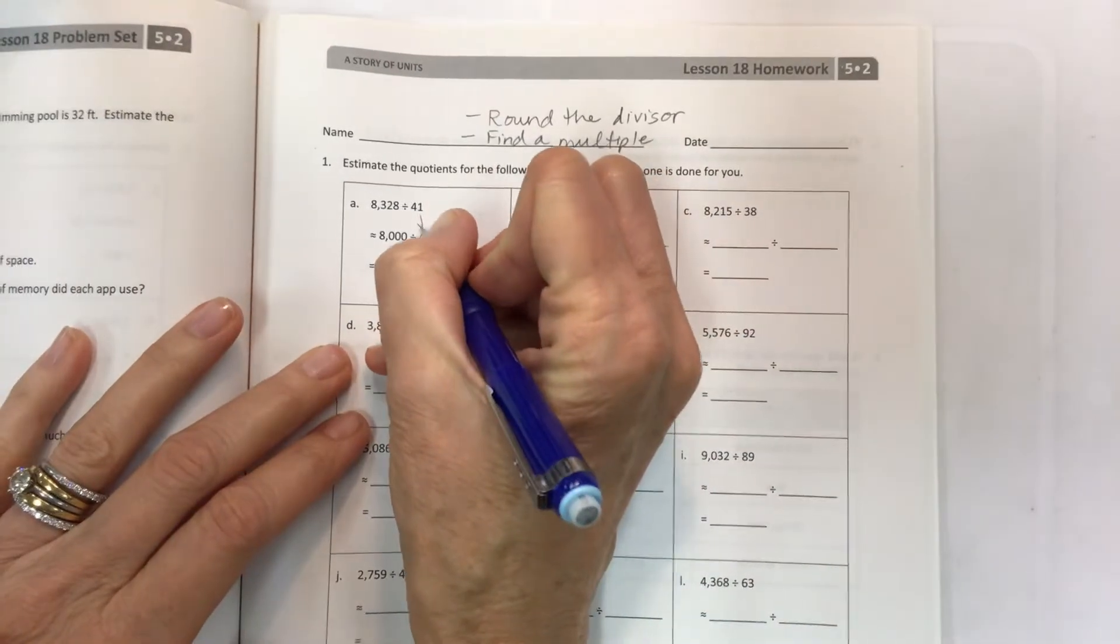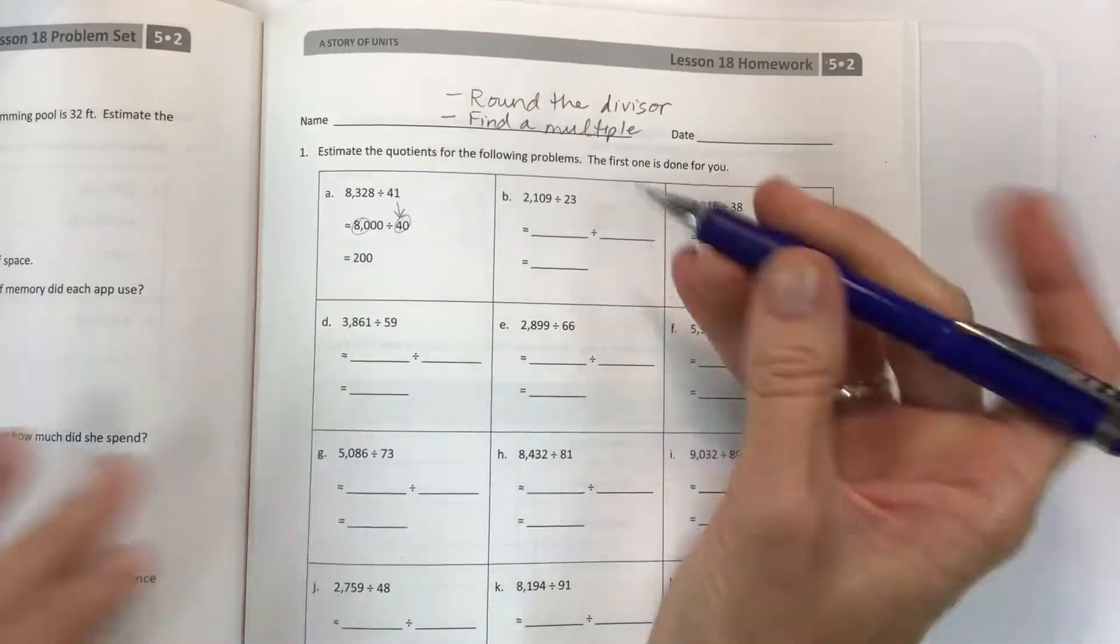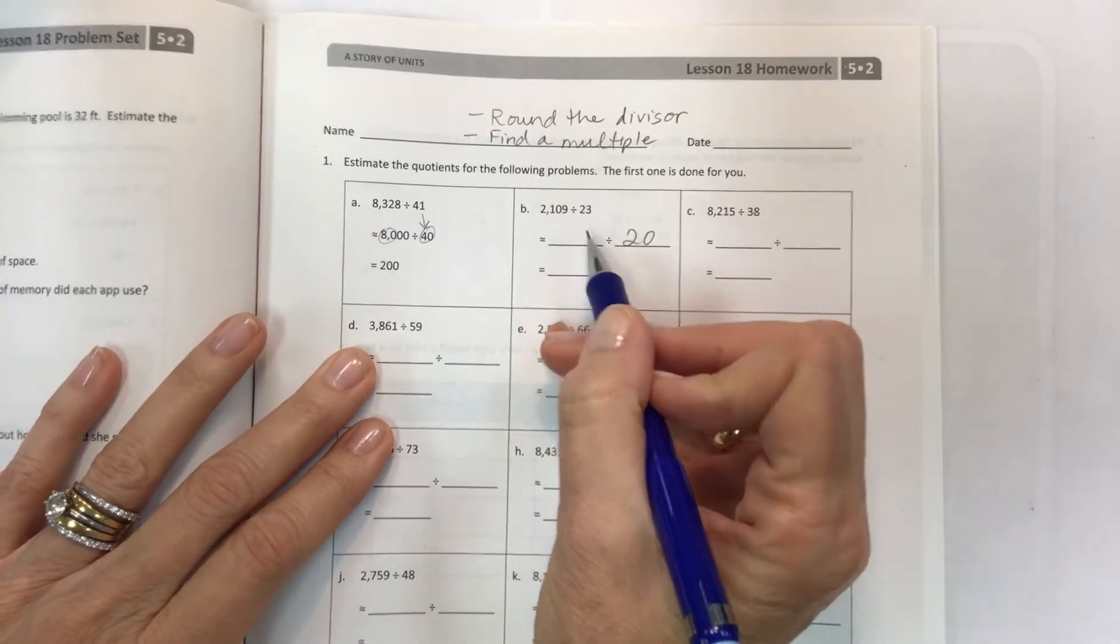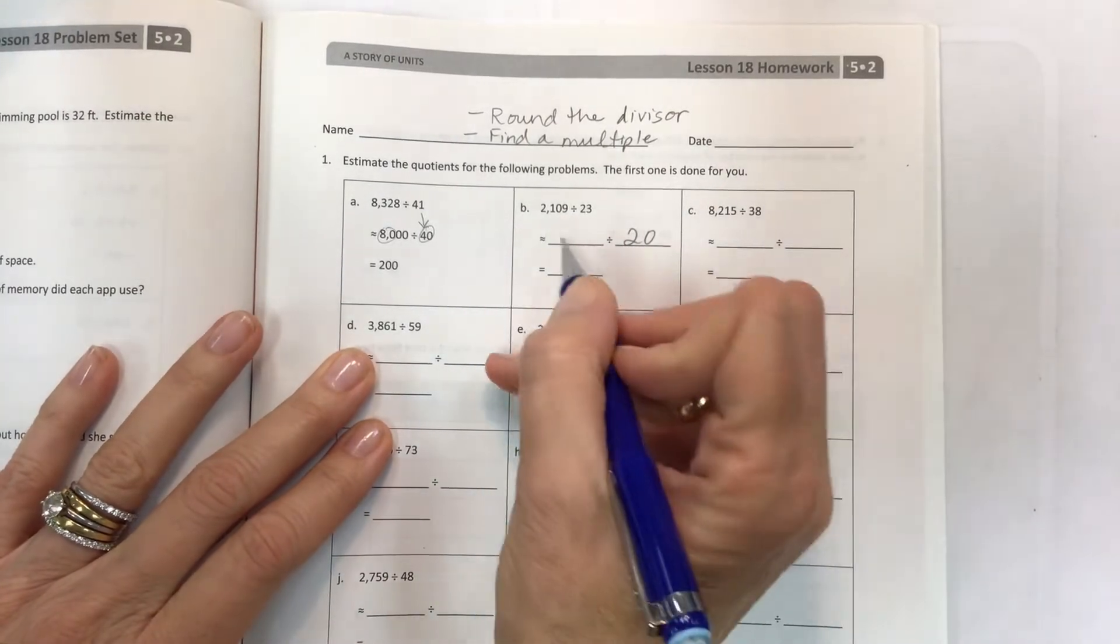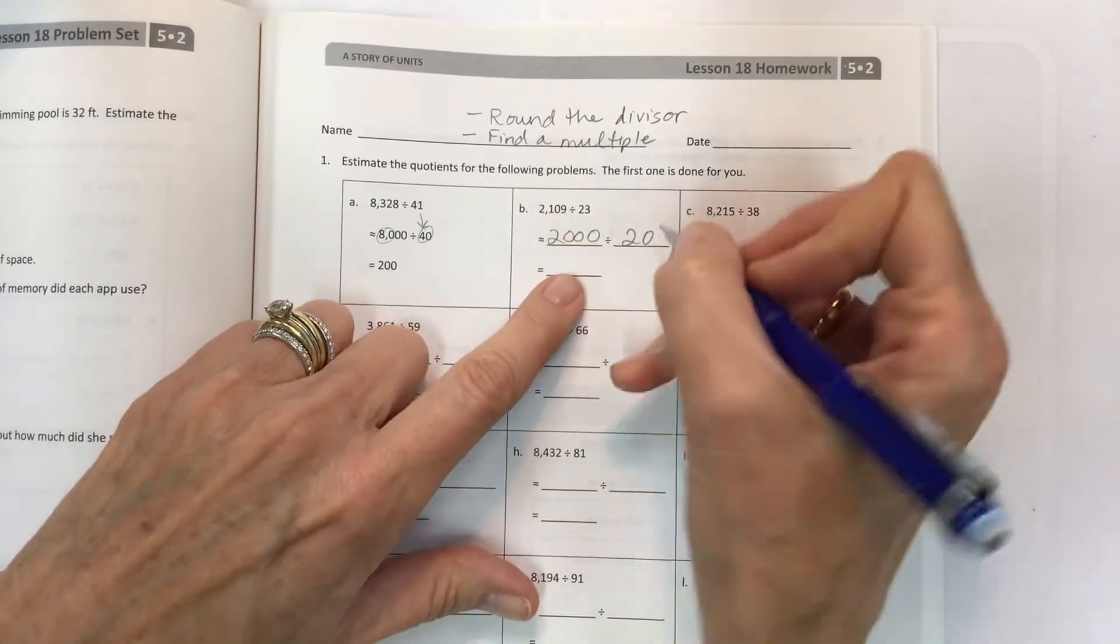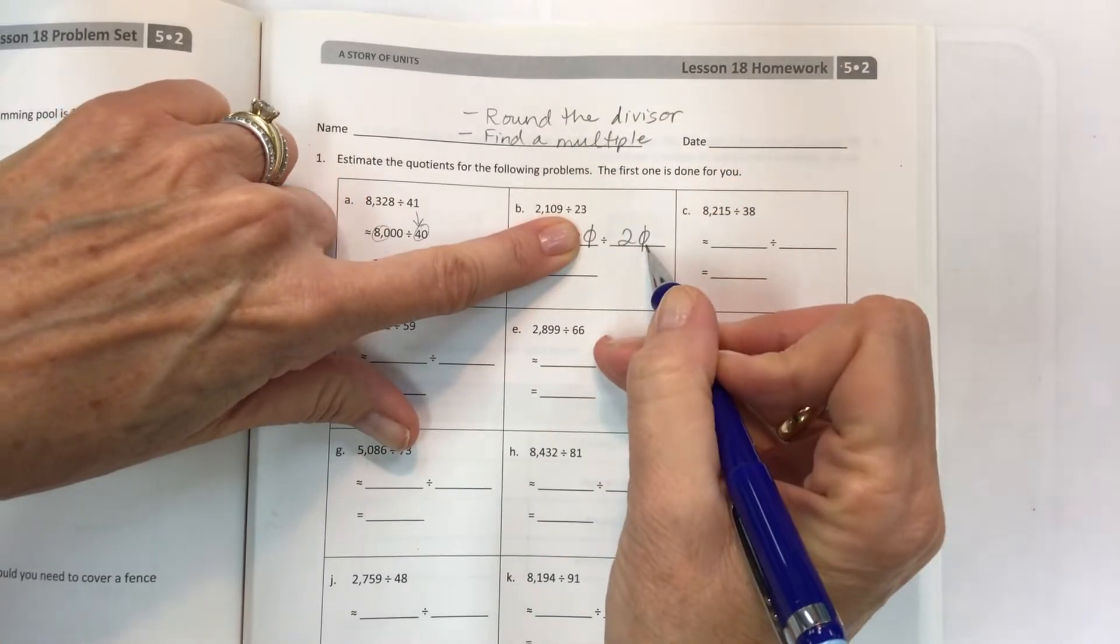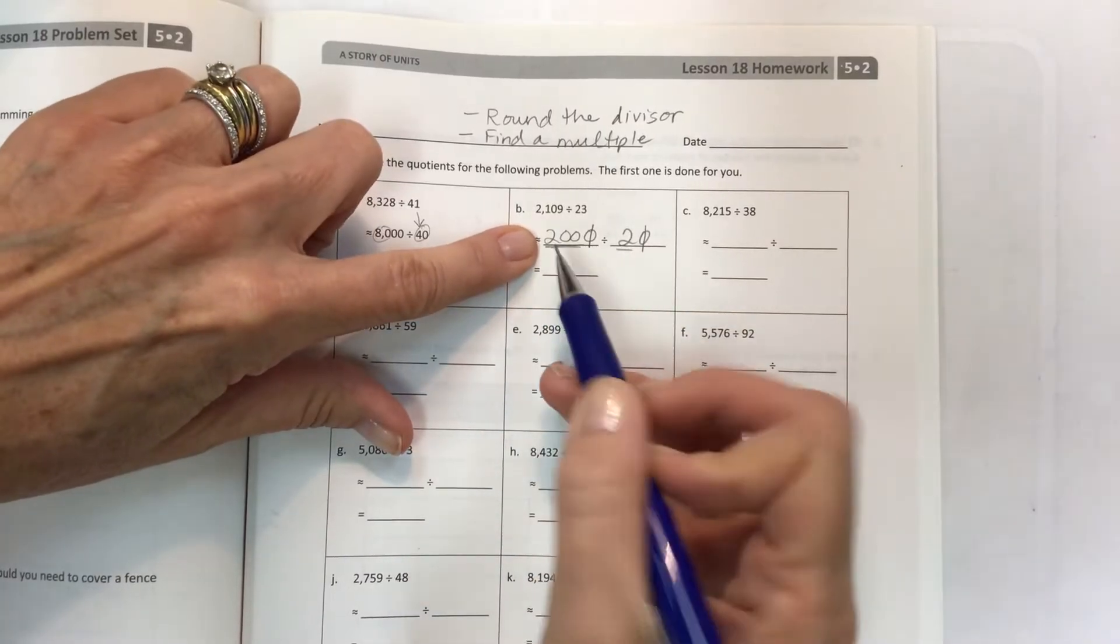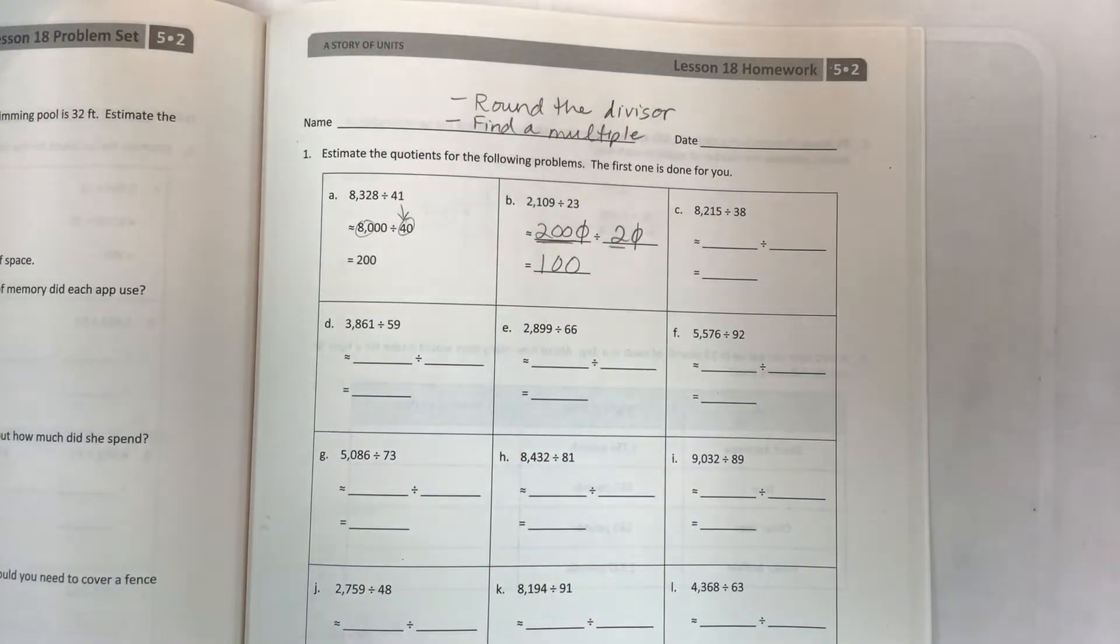Let's hop on right here to problem 23. Round the divisor first - it gets rounded to 20. A multiple of 20 that is close to 2,109 - well you can just use 2,000. Then we use our offsetting zero strategy. Find the pair - if I have one on this side and one on this side, I can take out one. That leaves us with 200 divided by 2, which is 2 divided by 2 for 1, and the two extra zeros come down.